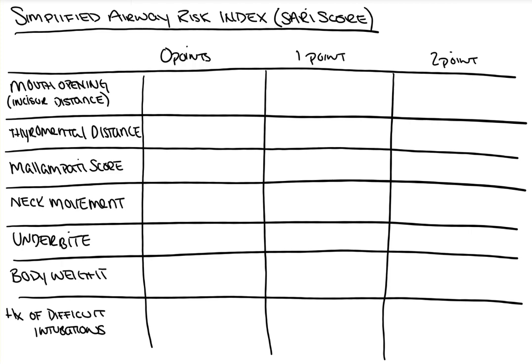We're going to fill this in, discuss the various categories and the point parameters, and why they may be predictive of a difficult airway. So, let's get started.